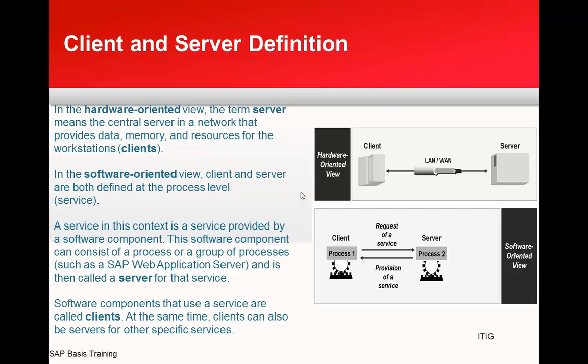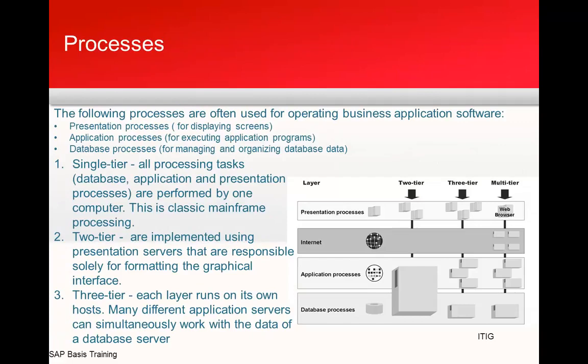The following processes are often used for operating business application software. At the top is the presentation process, beneath that an internet layer with tools like ICM or web dispatchers, then the application process where the SAP business logic runs, and below that the database process. In a single-tier setup all these run on one system; two-tier has the presentation layer separate; three-tier has all three layers on different systems.